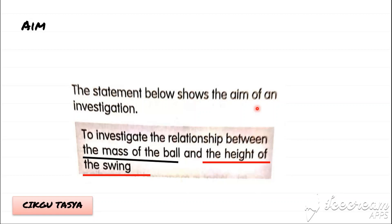You can just find the Manipulative Variable and Responding Variable from the aim itself. Look at the statement below — it shows the aim of the experiment. The one that comes first in the aim statement is the Manipulative Variable, while the one that comes behind or after that is the Responding Variable.